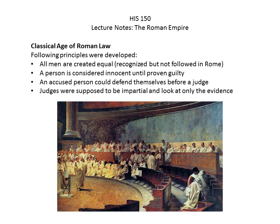Let's talk about Roman law and its parallels to the United States today. Classical principles were developed: all men are created equal — though not really followed in Rome, just as in 1776 it applied mainly to white landowning men. A person is considered innocent until proven guilty. An accused person could defend themselves before a judge, and judges were supposed to be impartial and look only at the evidence. All of these elements are in the US Constitution and Bill of Rights, primarily written by Thomas Jefferson, who was a scholar of Greek and Roman history.